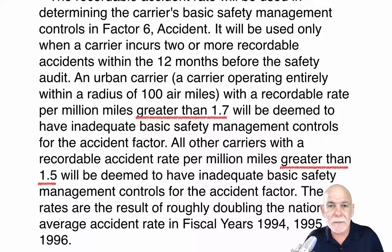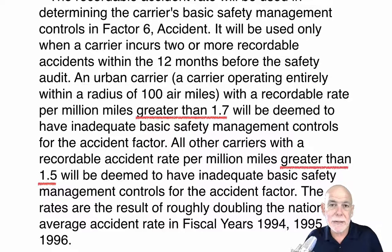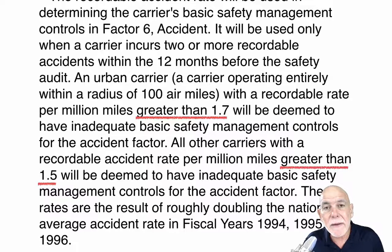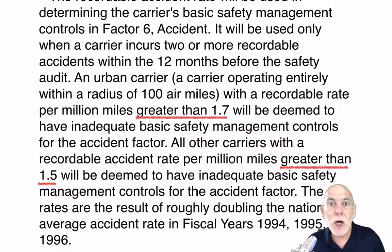If you cross-border, the SAFER system measures your accident factor, and that is likely going to put you into the alert. Where did they get this number? They doubled the accident rate for years 1994, 95, and 96 on average and came up with these numbers. So 1.5 is double the national accident rate. That means if you're a long-haul operator, the national accident rate used to be 0.75 — three quarters of an accident for every million miles traveled was average. So if you're doing 0.75 or more, you are worse than the average trucking company. If you're doing 0.75 and less, you're better.